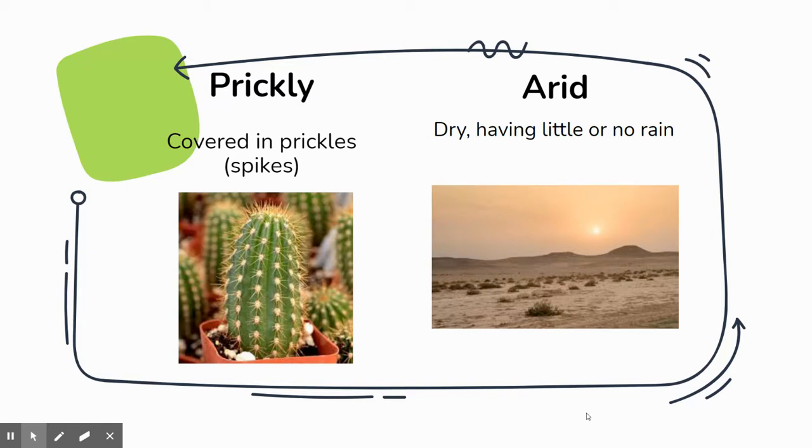Arid means dry, having little or no rain. Again, there's a picture of a desert because they're a very arid place.